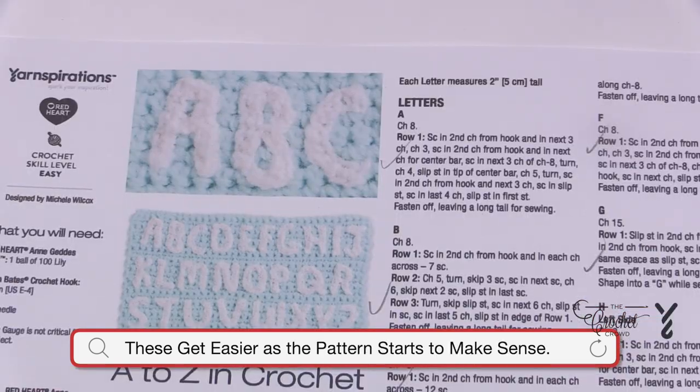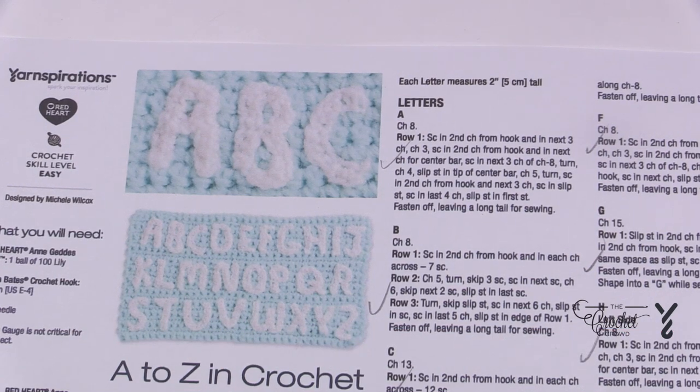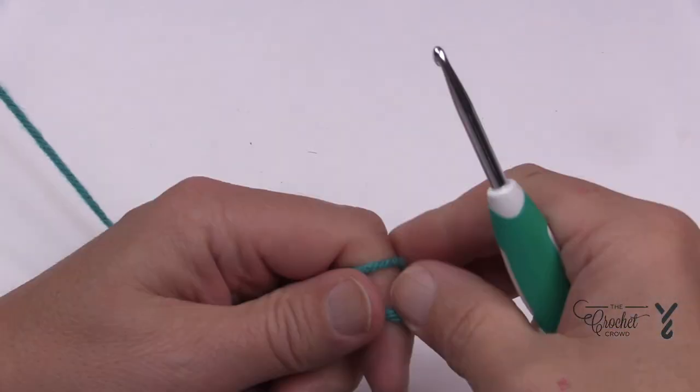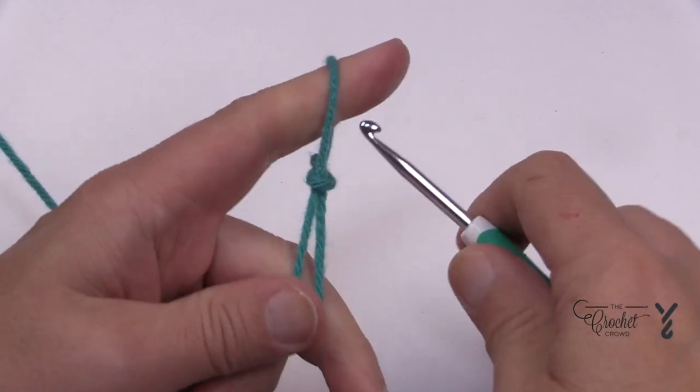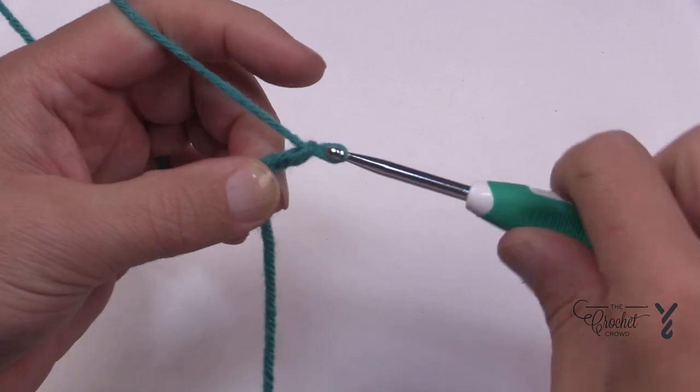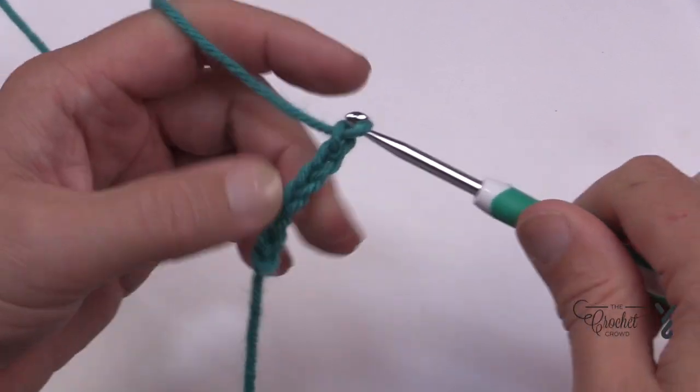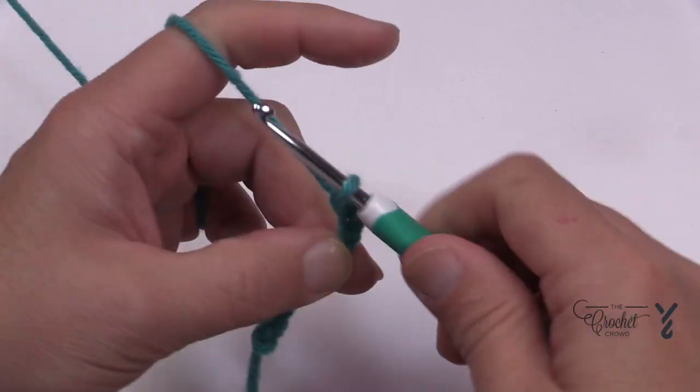Let's begin the letter R using a 4.5 mm, size G crochet hook with Caron One Pound. Let's begin with a slip knot and chain a total of eight. One, two, three, four, five, six, seven and eight and let's begin row number one.